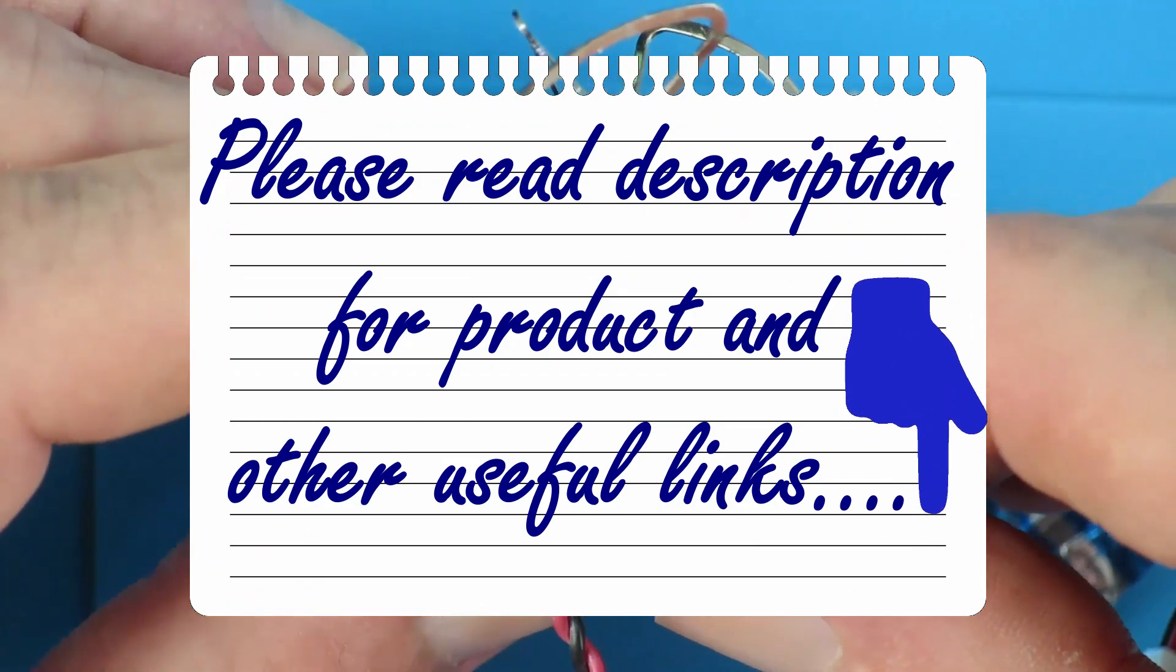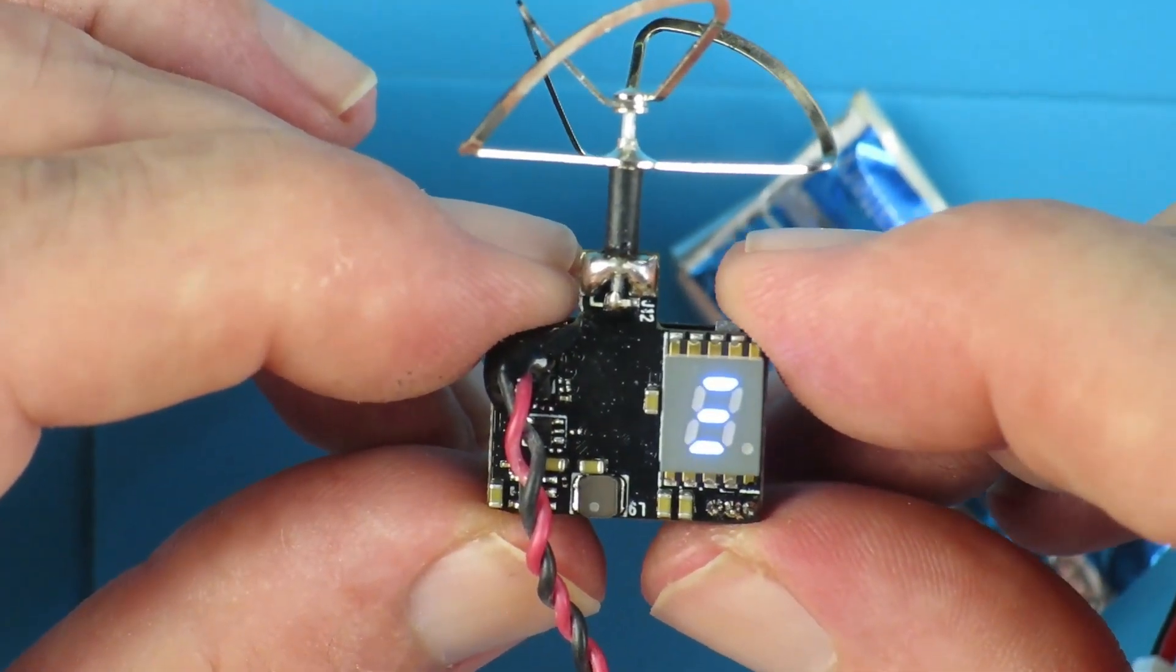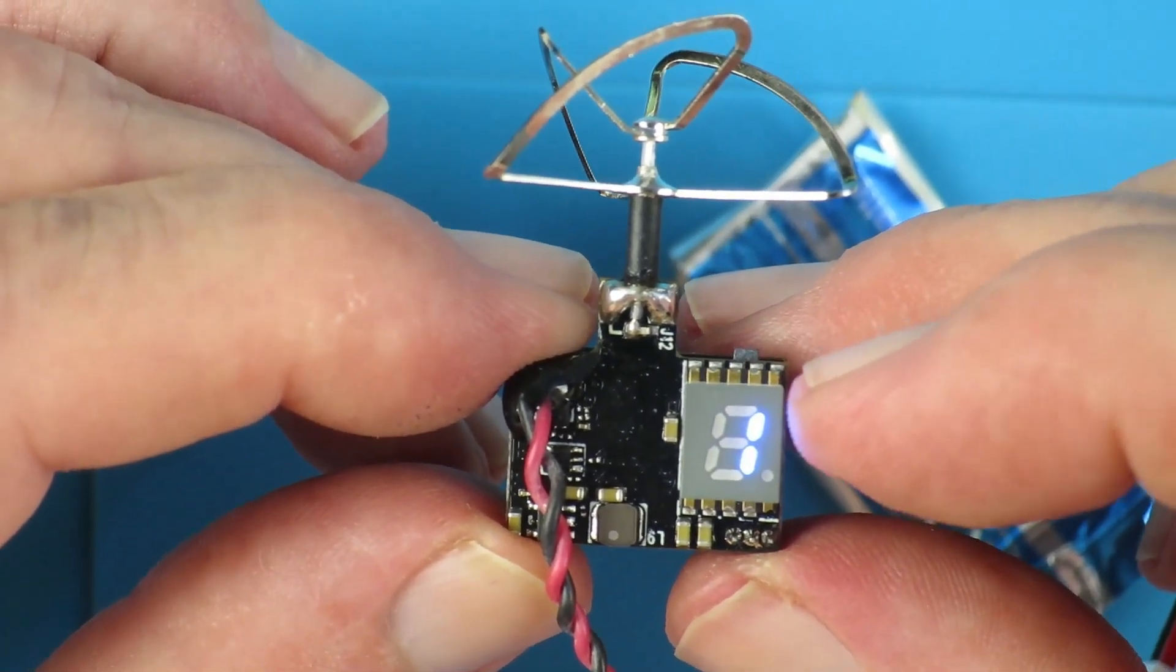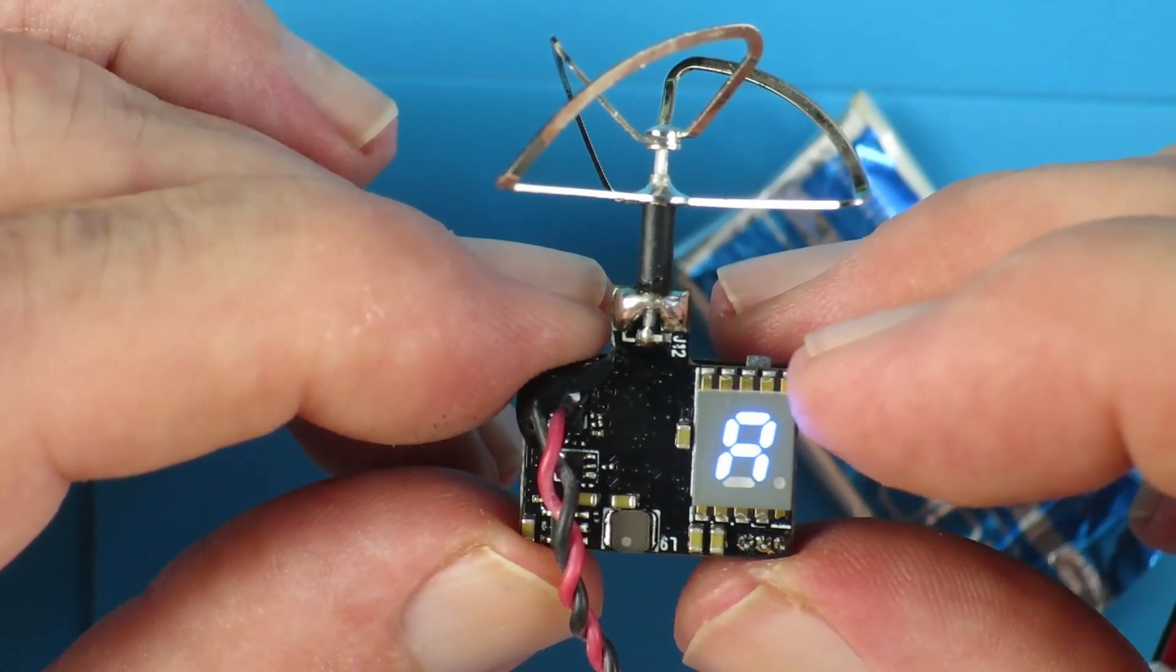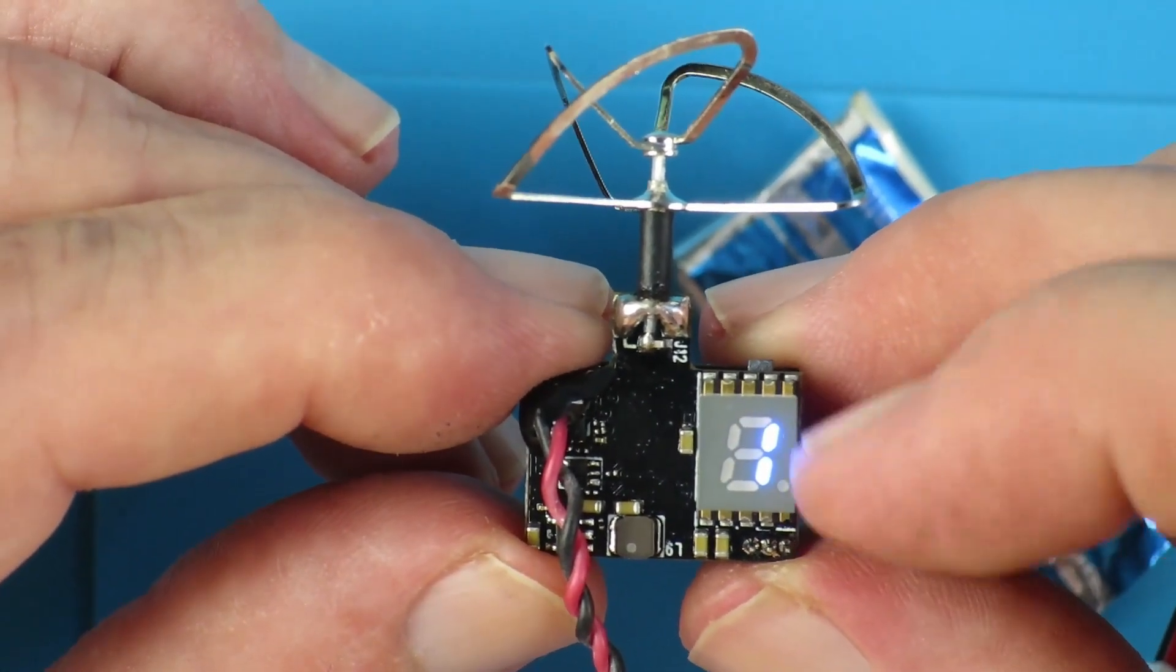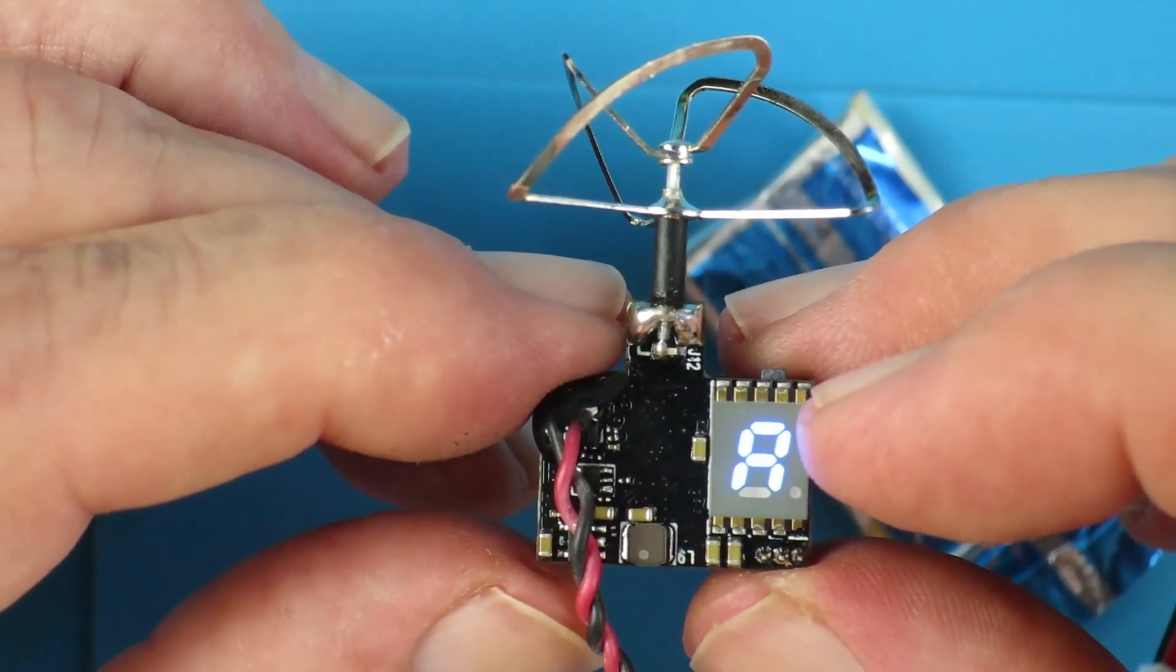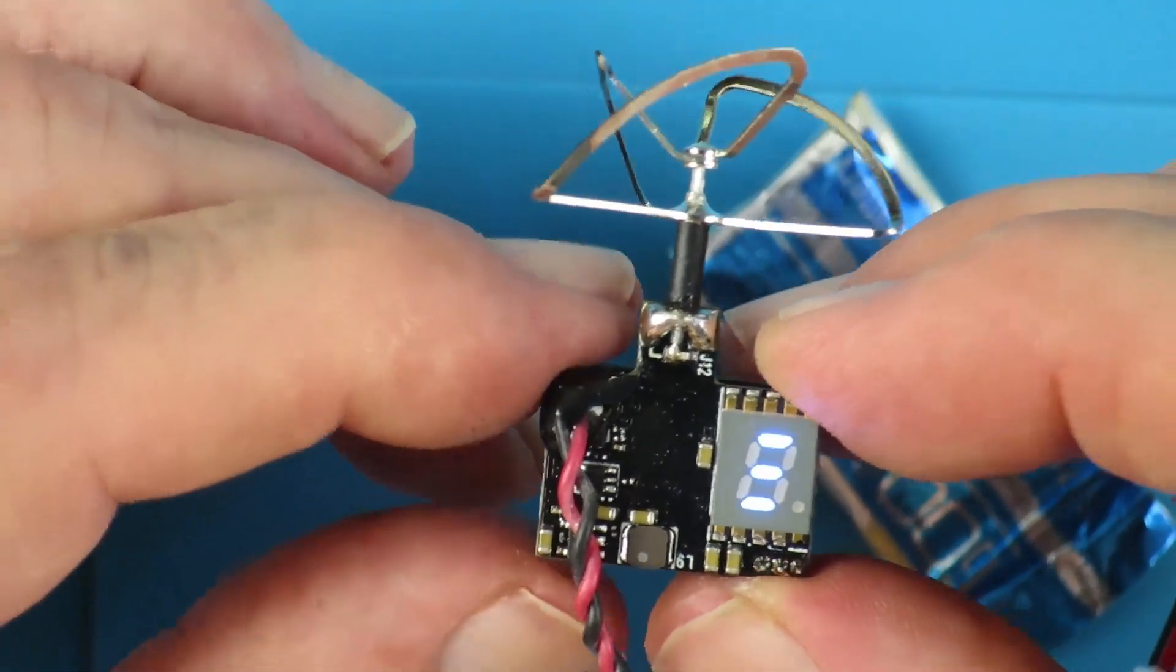With the camera transmitter hooked up to just a single lithium cell, we can see that it's cycling through. First, the A refers to the band, one refers to the channel within that band and the three lines indicate that it's on 200 milliwatts. So, there's 25 milliwatts, 100 milliwatts and 200 milliwatts.